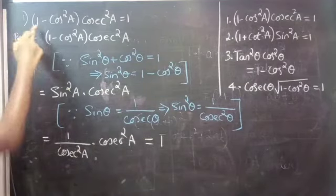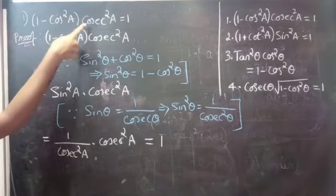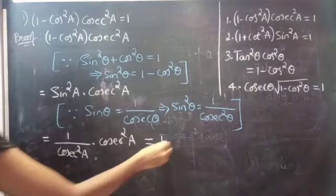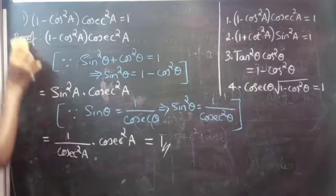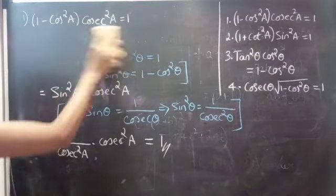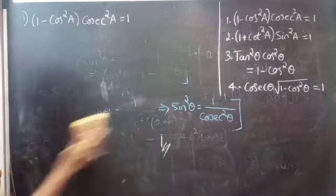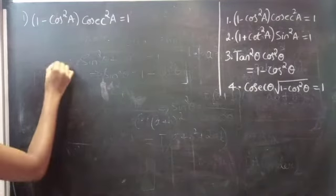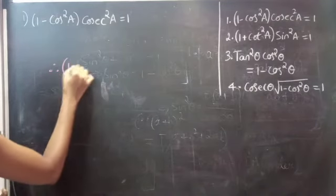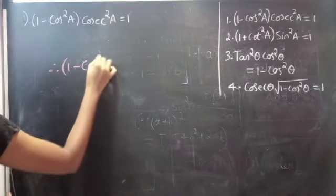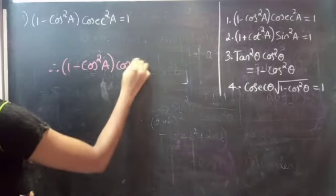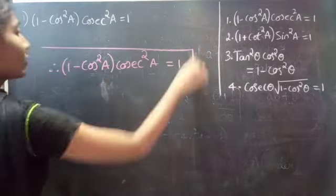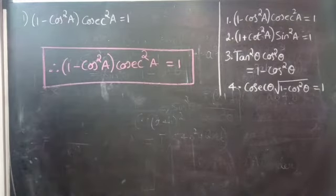Therefore, (1 - cos²A) · csc²A = 1. That completes the first identity. Next, the second one.